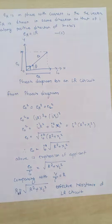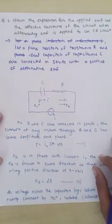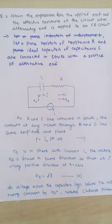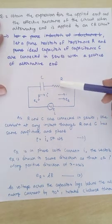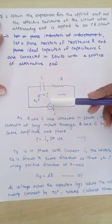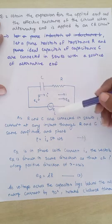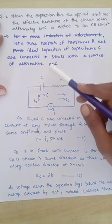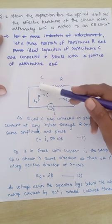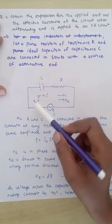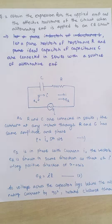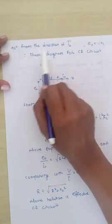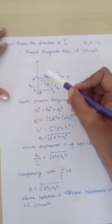The second question is similarly based but for a CR circuit. Here we use an ideal capacitor of capacitance C and a resistor of resistance R connected in series with an AC supply. In this case, ER is in phase with current I₀ along the positive x-axis, while the voltage across the capacitor lags behind the current by 90 degrees — rotated clockwise through 90 degrees from the direction of I₀.